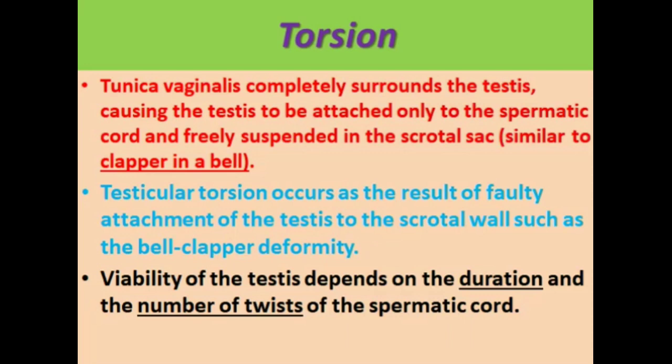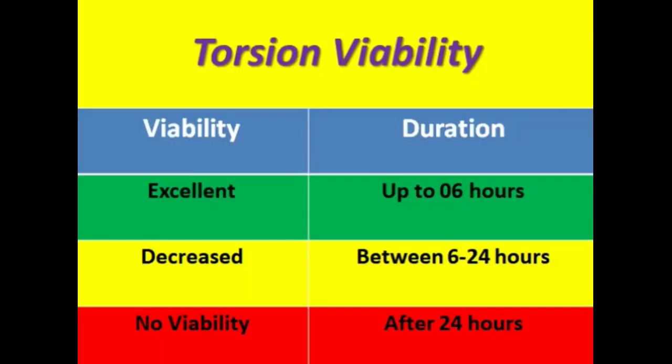Viability of the testes depends on the duration and the number of twists of the spermatic cord. Viability will be excellent if the torsion is diagnosed within six hours and the testes is detorsed. Viability is significantly decreased if the duration is from six to 24 hours, while there is no chance of viability if the duration of torsion is more than 24 hours.